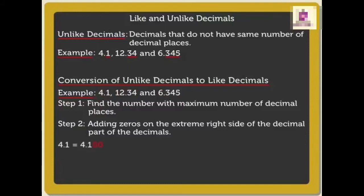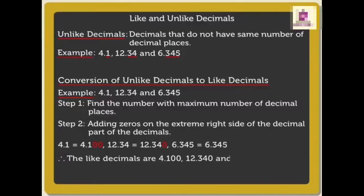So, the numbers we will get are 4.100, 12.340, and 6.345. The like decimals are 4.100, 12.340, and 6.345.